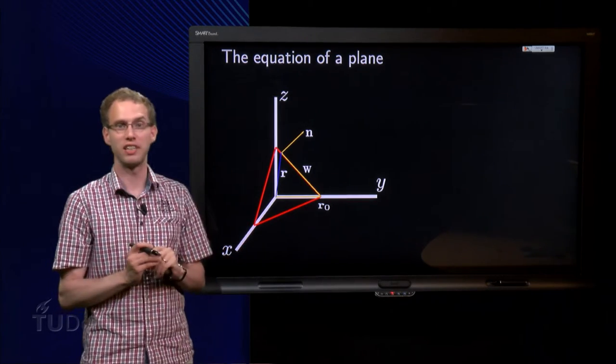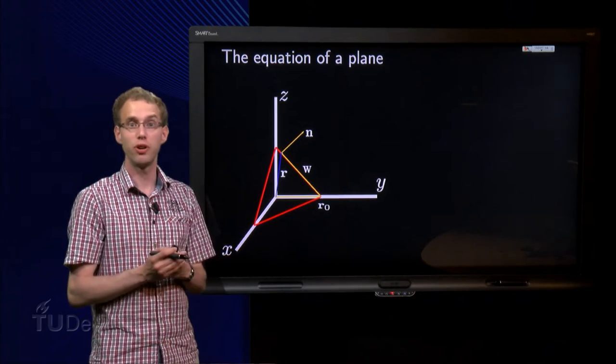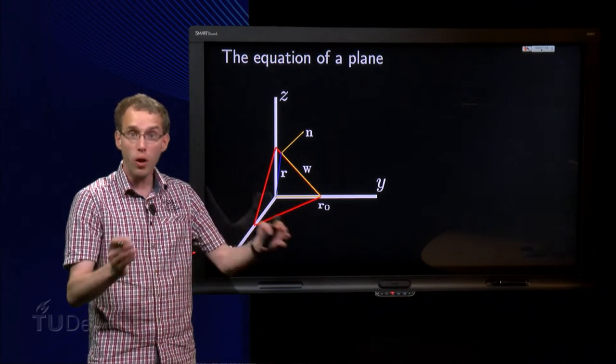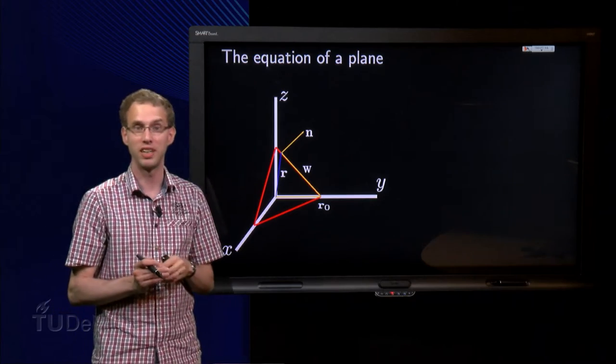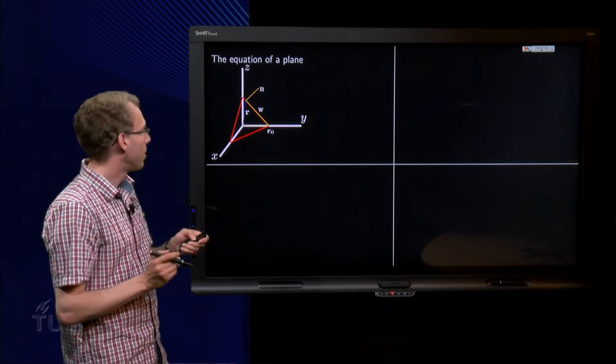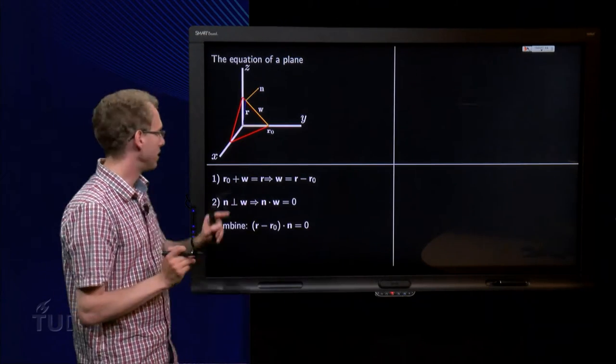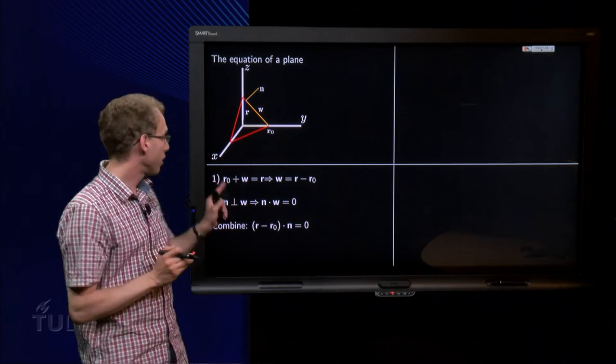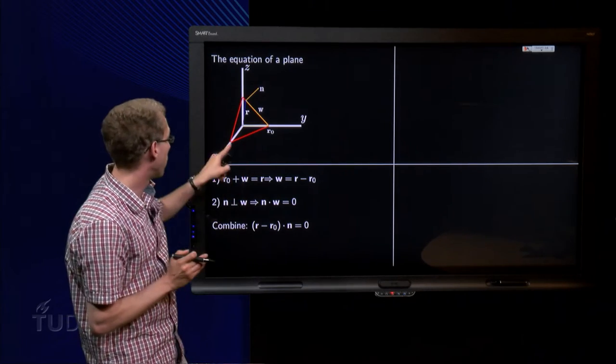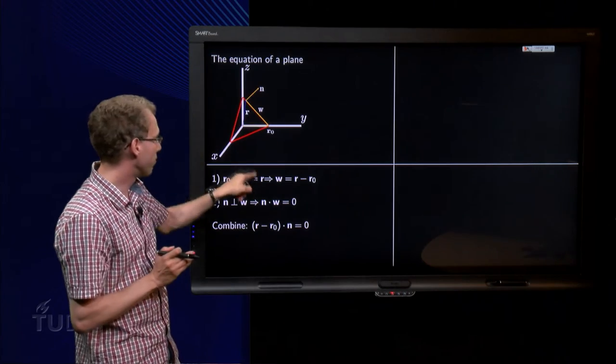So that is about the picture. And now we can determine the equation of a plane, we have all information needed, it is all in this one picture. How? Well, let us summarize the information a bit. r0 plus w, so r0 plus w equals r, so w equals r minus r0.